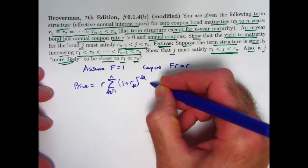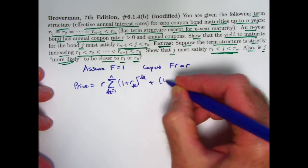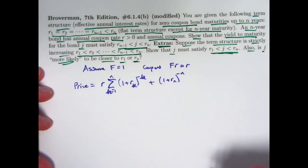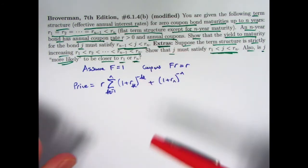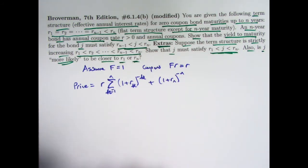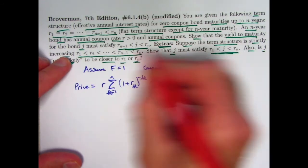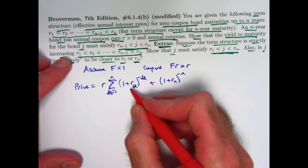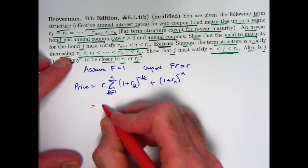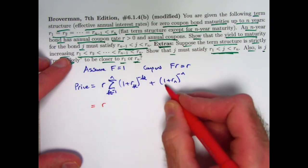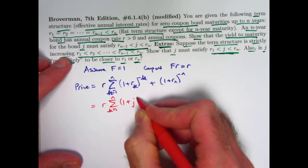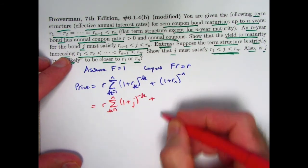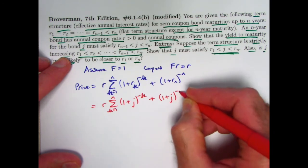Then you've got the present value of the redemption amount of 1, using r_n: so you'd add (1 + r_n)^{−n}. That's one way to think about the price. By pricing consistency, if j is the annual yield for this bond, I could also use j in place of all the r_k's. This price should also equal the discounted value of all the coupons and the redemption amount using j — the yield rate. So I replace each r_k with j, including r_n.